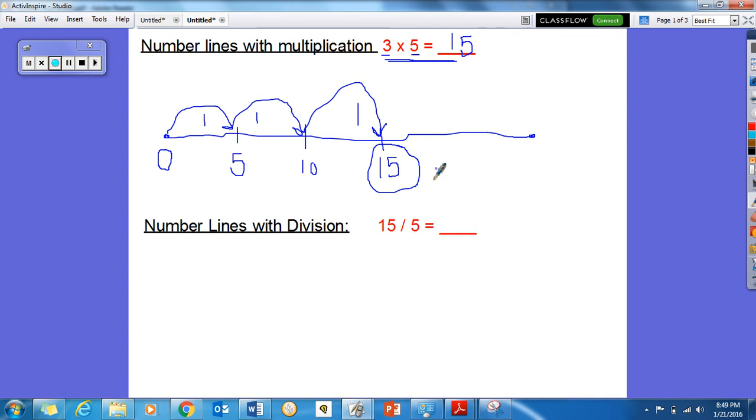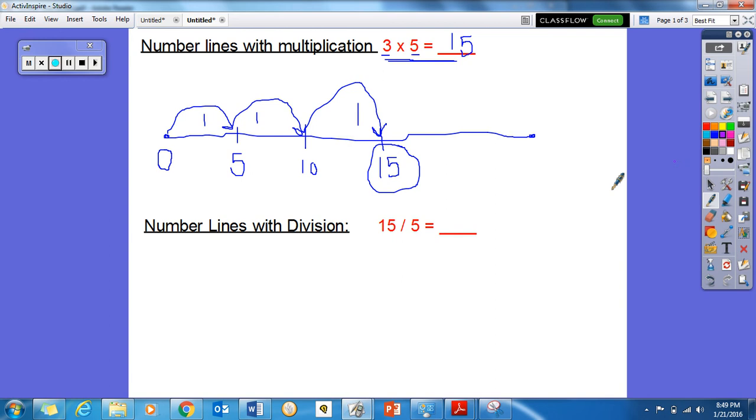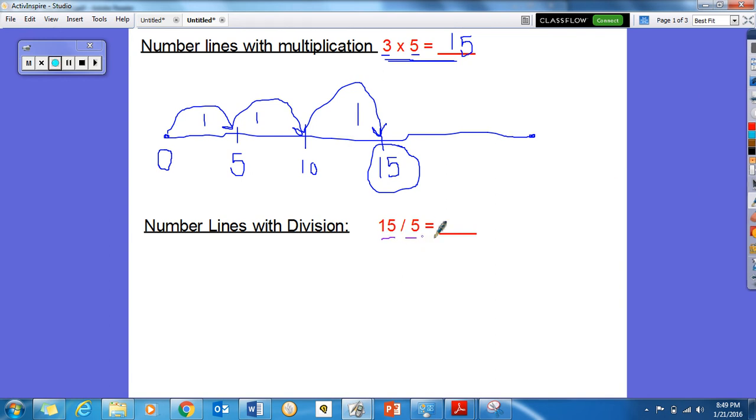Now if we're going to divide using a number line, let's change our color. We're going to divide 15 divided by 5 equals blank. Now remember, when we divide with a number line, again, we're going to skip count by 5s, and we're going to go until we reach the number 15. We're going to draw our number line. Again, always start with 0. Skip count by 5s until we get to 15.